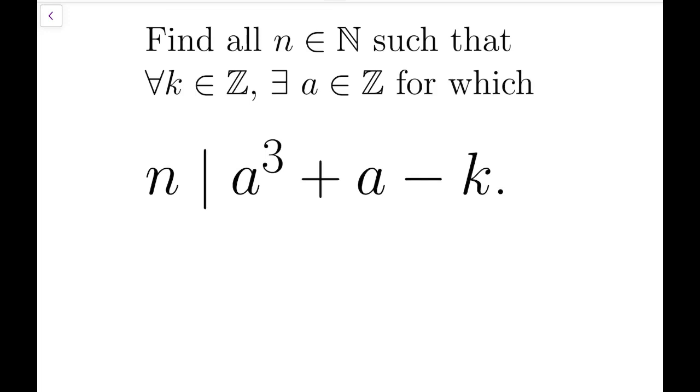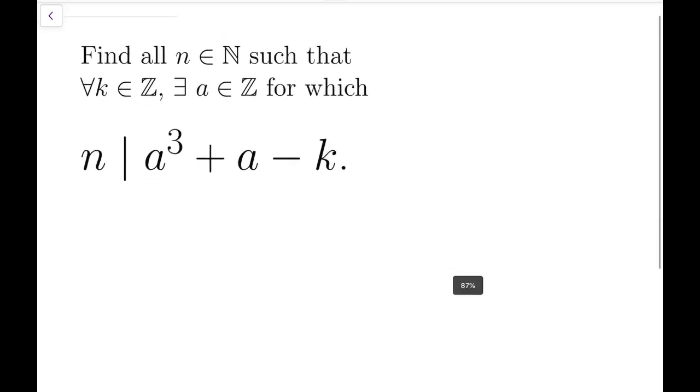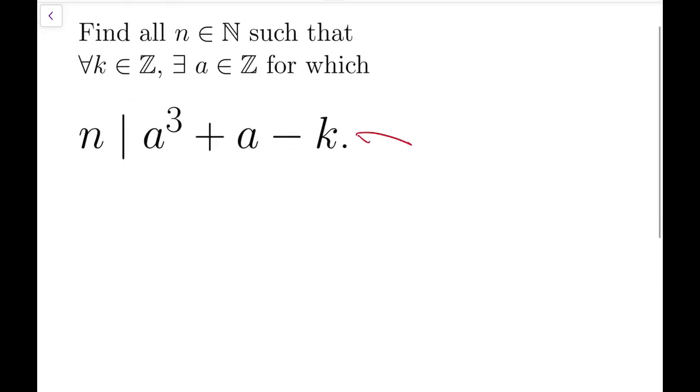It says find all natural numbers n as a divisor part, and so a³ + a - k would be divisible by n. So I'm going to first translate this to a³ + a is congruent to k mod n.